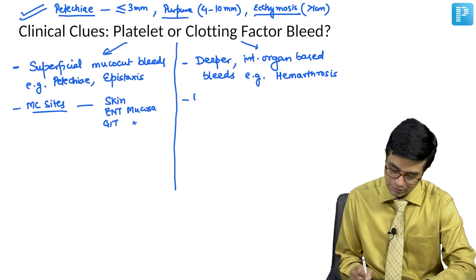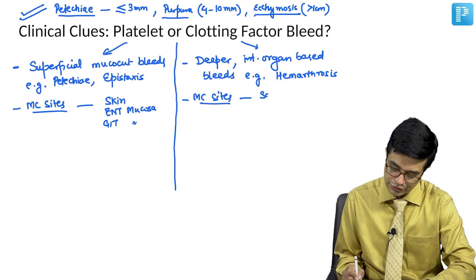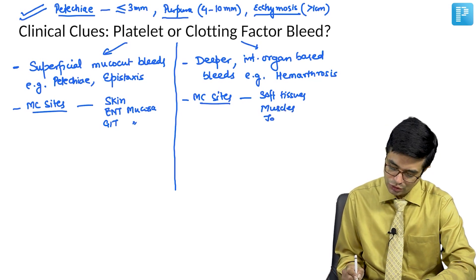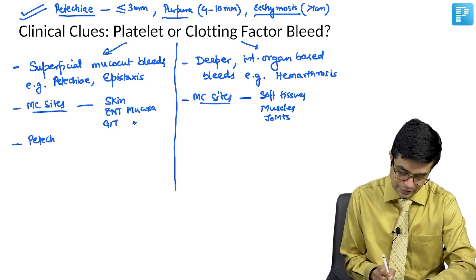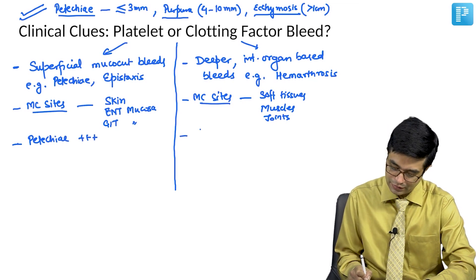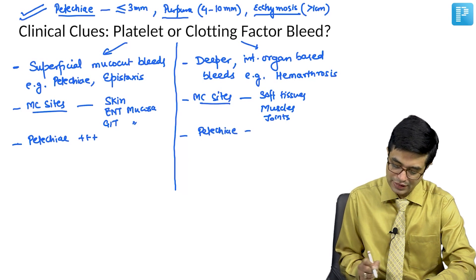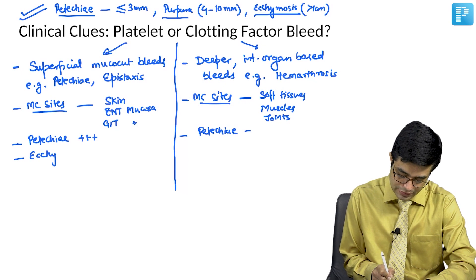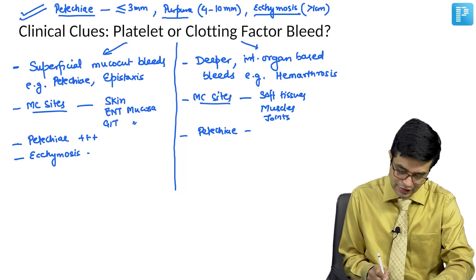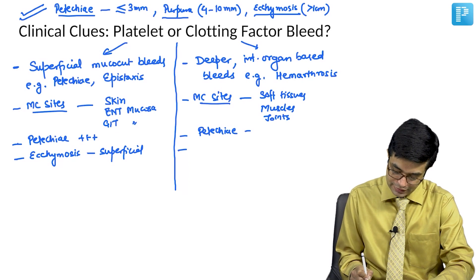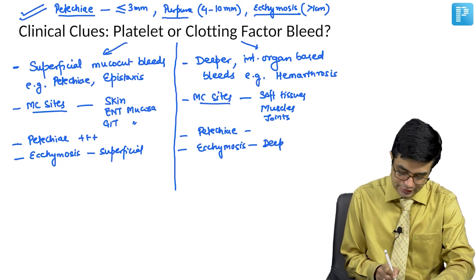In platelet factor bleeds, petechiae are usually present, whereas in clotting factor bleeds, petechiae are usually absent. Ecchymosis and purpura can occur in both, although they are more common in platelet factor bleeds. In platelet bleeds, ecchymosis are superficial and small, whereas in clotting factor bleeds, the ecchymosis are deeper. Platelet factor bleeds are common with trivial trauma.